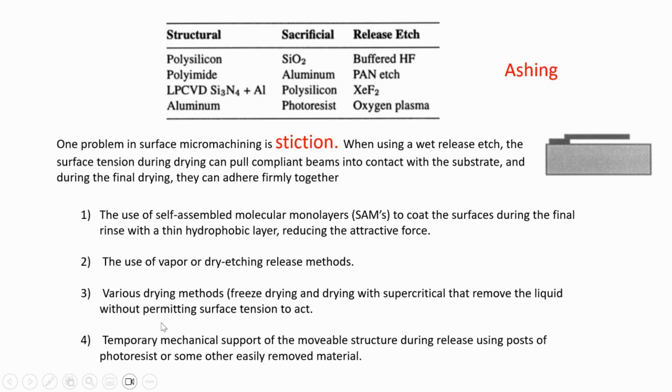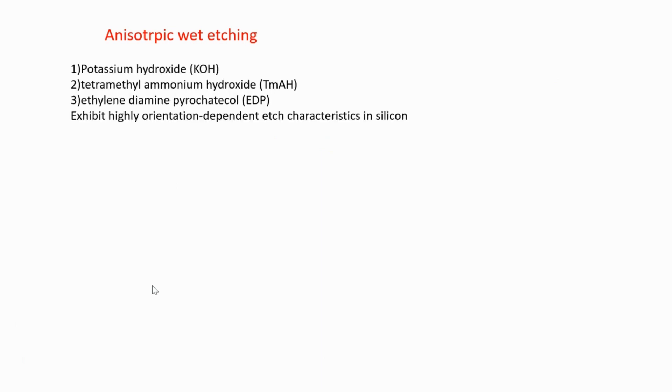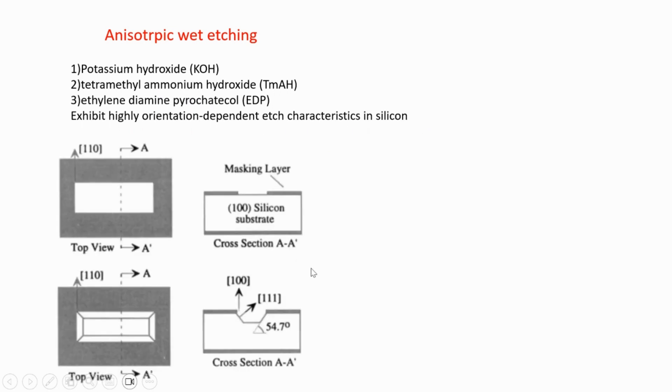The other type is anisotropic wet etching. Anisotropic etching means that your etching is dependent on your crystal orientation. Strong bases such as potassium hydroxide, tetramethyl ammonium hydroxide, and ethylene diamine pyrocatechol exhibit highly orientation-dependent etch characteristics.